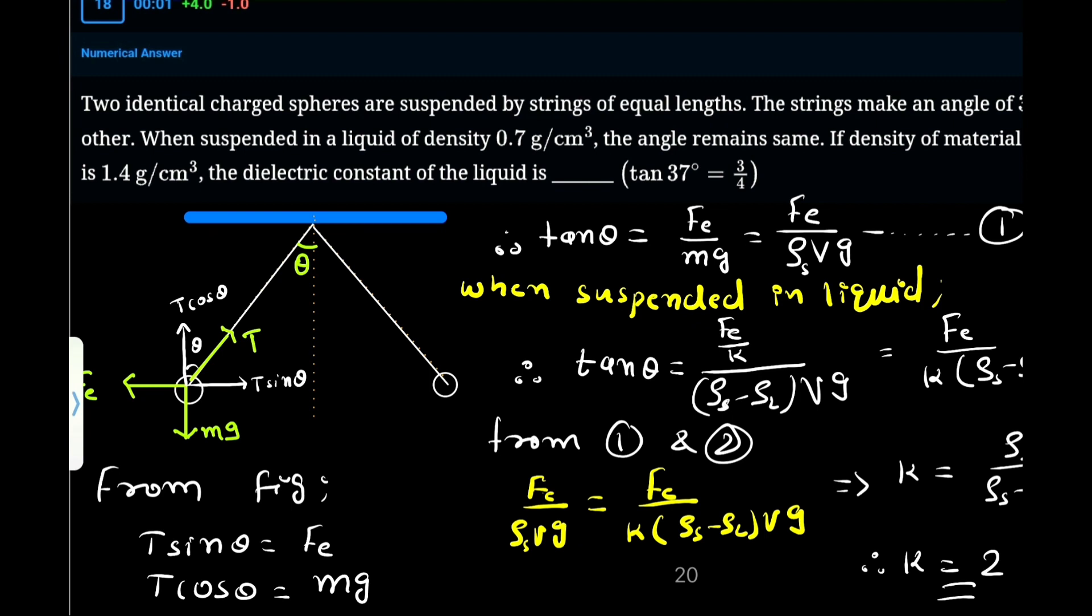If I try to make the component of the tension, here this is angle theta and the tension is along the thread. This is an alternate angle, so this is also theta. T has a component T cos theta and T sine theta.